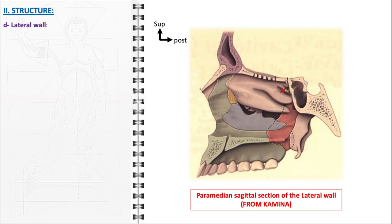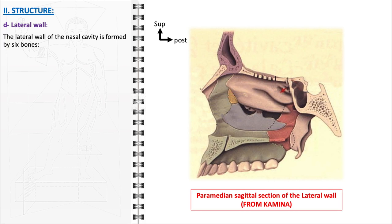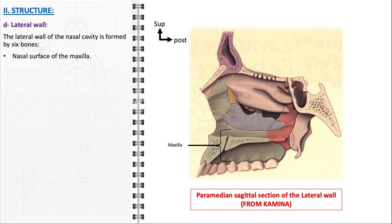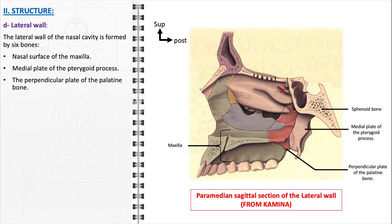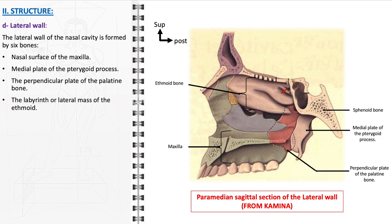The lateral wall of the nasal cavity is an intricate and multifaceted structure composed of six distinct bones. The nasal surface of the maxilla forms a large portion of the anterior section. The medial plate of the pterygoid process, a part of the sphenoid bone, contributes to the posterior aspect. The perpendicular plate of the palatine bone forms a significant part of the posterior section, delineating the boundary between the nasal cavity and the nasopharynx. The labyrinth or lateral mass of the ethmoid is crucial for the formation of the superior and middle nasal conchi, playing a key role in air filtration and conditioning.